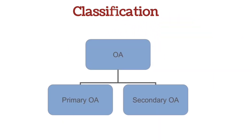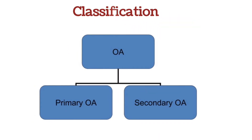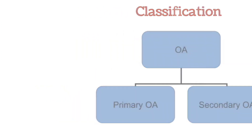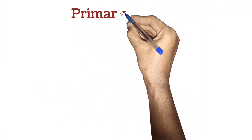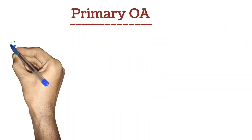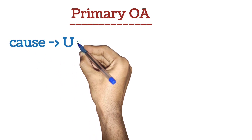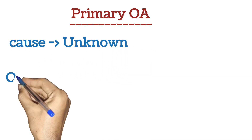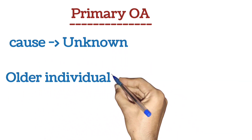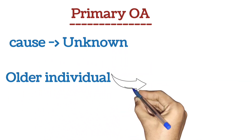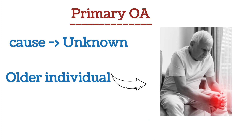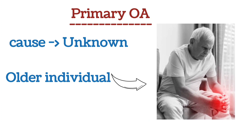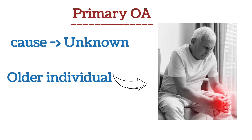Classification: There are two main types of osteoarthritis — primary OA and secondary OA. Primary OA is more common and its exact cause is still unknown. It typically affects older individuals without any previous joint pathology, primarily occurring in weight-bearing joints due to age-related degeneration.